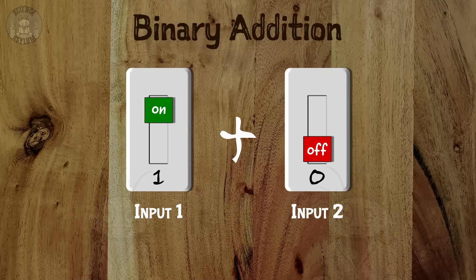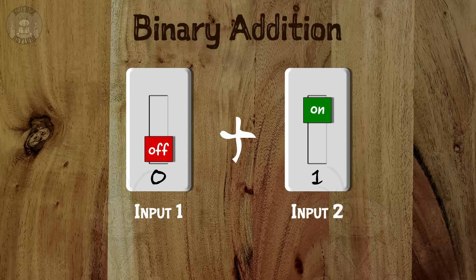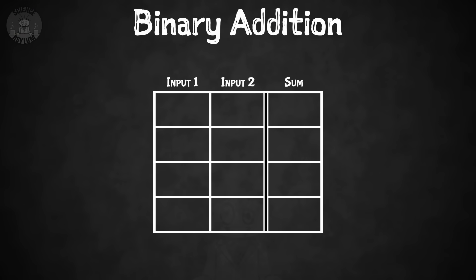How does this let us do math? Let's start with something more basic — adding two single digit binary numbers together. That means we need two manual switches, one for each single digit input. But that doesn't tell us how many automated switches we need, or how to connect them to get the result we want. Remember, this is not natural — we're imposing the numbers on the switches. Two inputs with two possible states each means four possible combinations. 0 plus 0 equals 0. 0 plus 1 equals 1. And 1 plus 0 equals 1. But 1 plus 1? That's a little tricky.